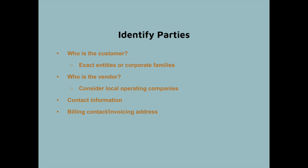As to vendors, many companies have different operating entities in different locations. For example, a vendor might have one company in the U.S. and one in the EU for local sales, for regulatory or practical reasons. You want to make sure you get the right vendor entity. You'll also have contact information and billing contact information — all fairly nuts and bolts — but this section identifies exactly who is bound by the contract.